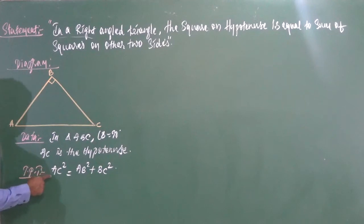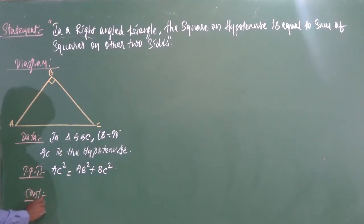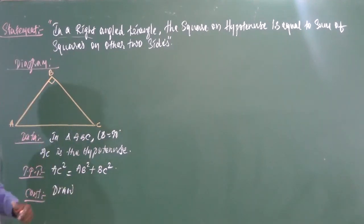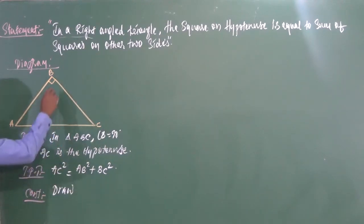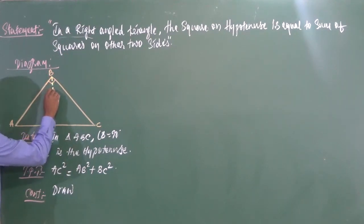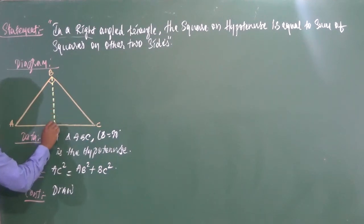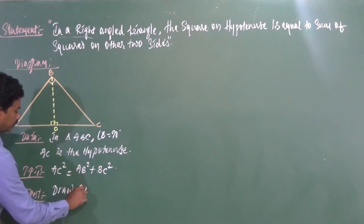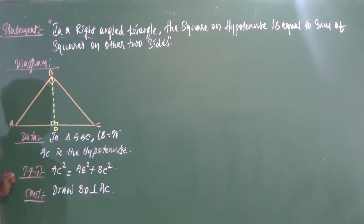As the data is insufficient to prove this, we need a small construction. Since we are proving this theorem on the basis of similar triangles, we need a similar triangle. Construction: draw BD perpendicular to AC. This converts the one right-angled triangle ABC into two right-angled triangles by dropping a perpendicular from B to the hypotenuse AC.